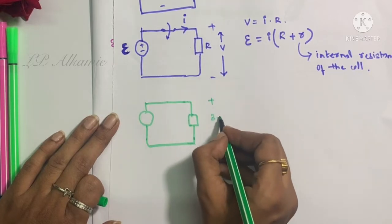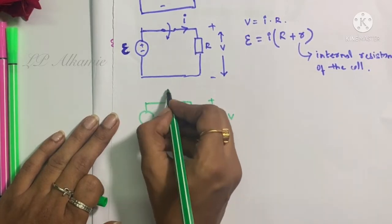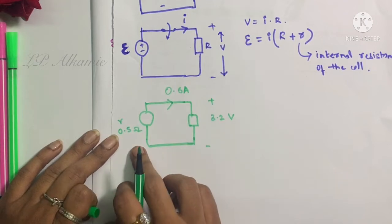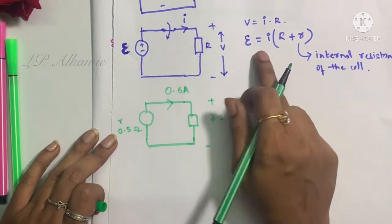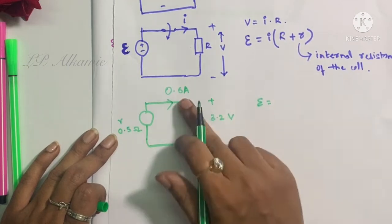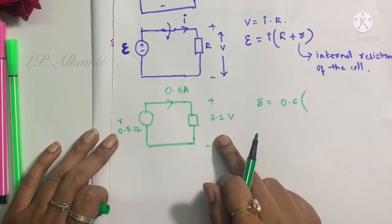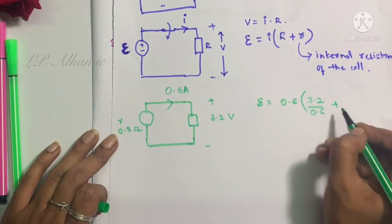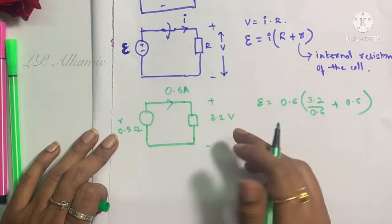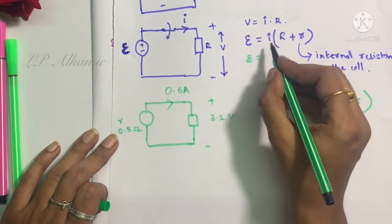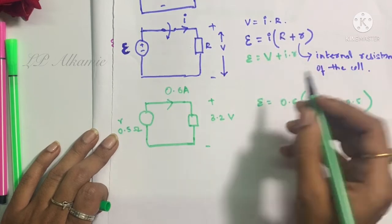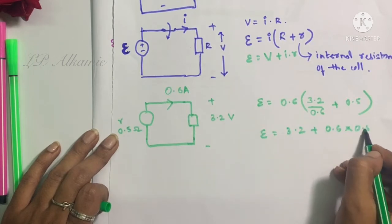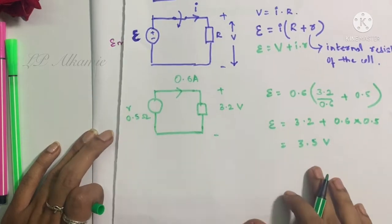Let's consider a numerical example. The voltage across the circuit is 3.2 volts, the current flowing through it is 0.6 amps, and the internal resistance of the battery is 0.5 ohms. To find the EMF across the source, you can use the formula E = i(R + r). Here, R is found from voltage divided by current, plus 0.5 ohms. Alternatively, E = V + i·r.